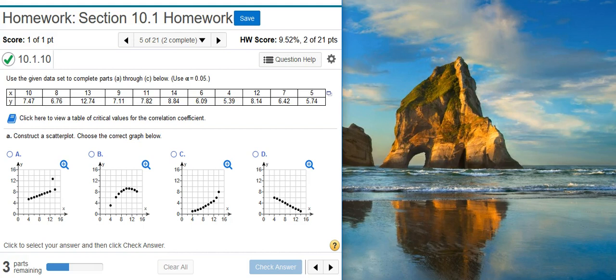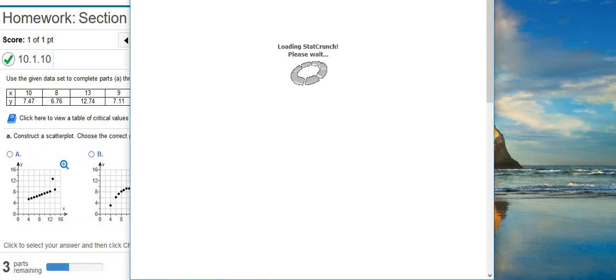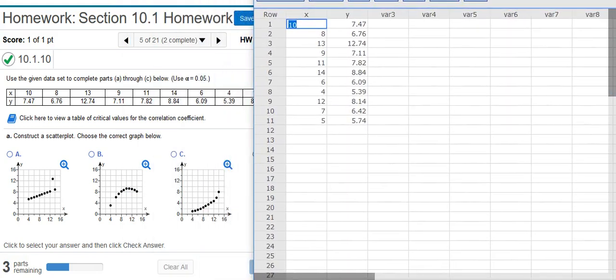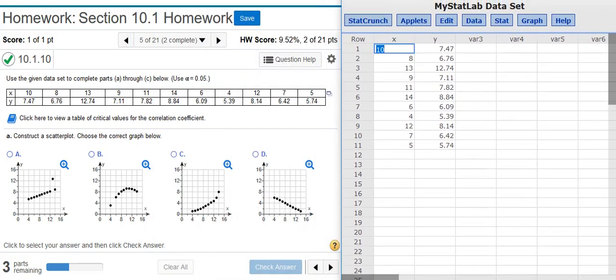Okay part A asks us to construct a scatter plot. To do this we're going to use StatCrunch. The first step is putting the data inside StatCrunch. I'm going to resize this window so we can see better what's going to go on.